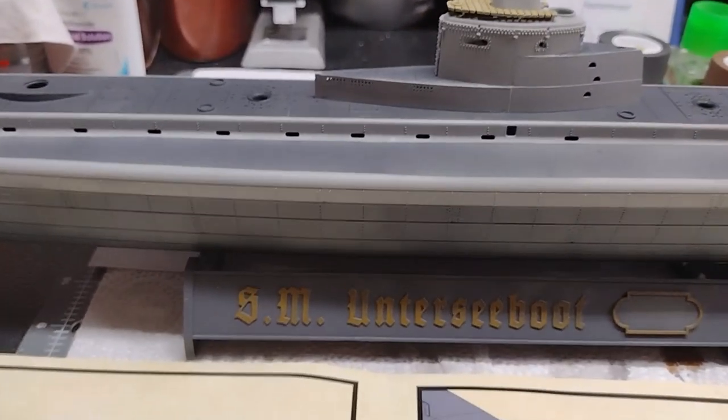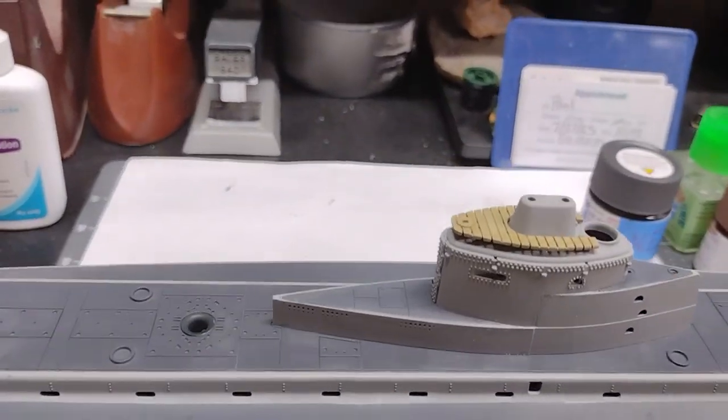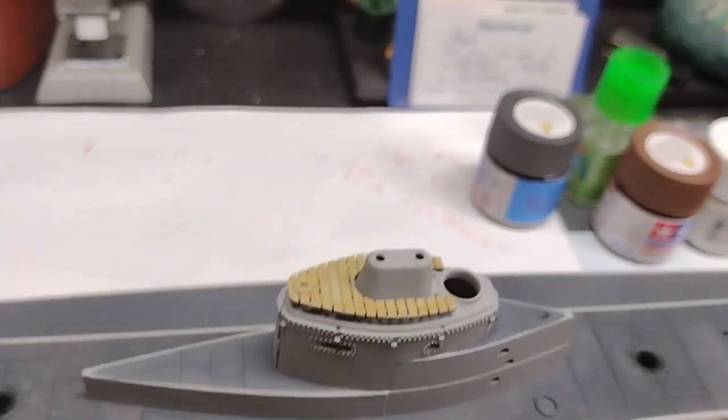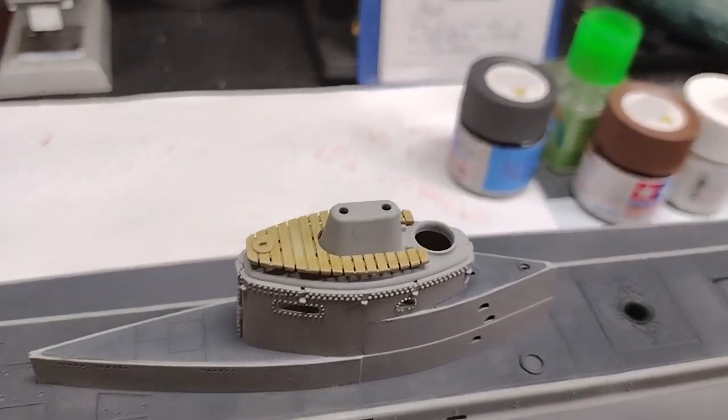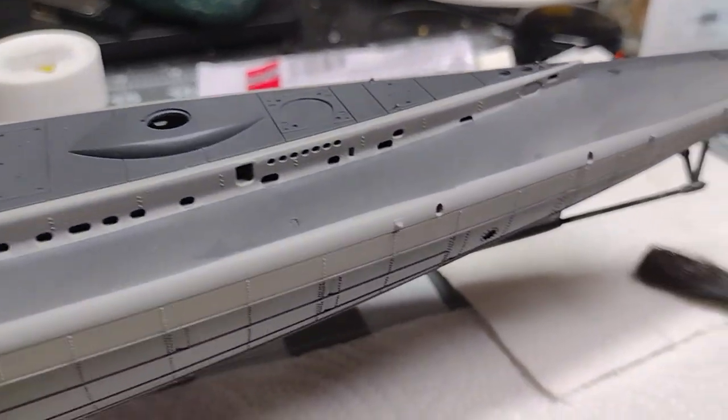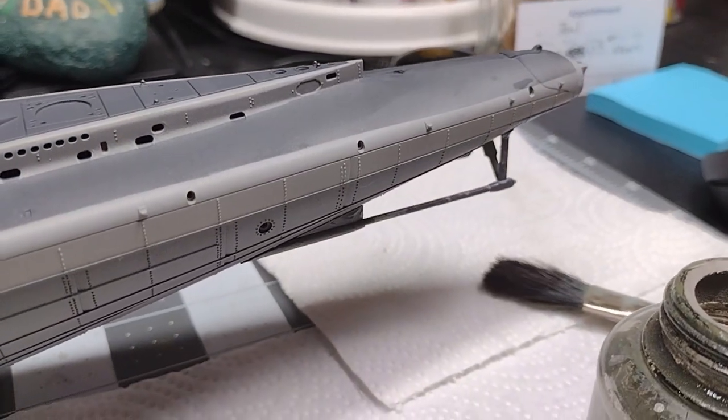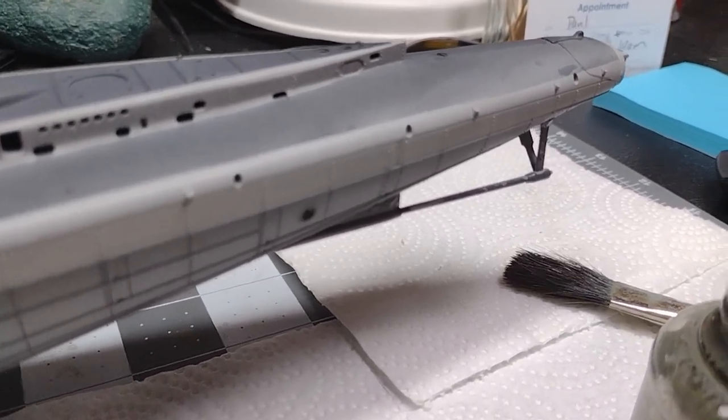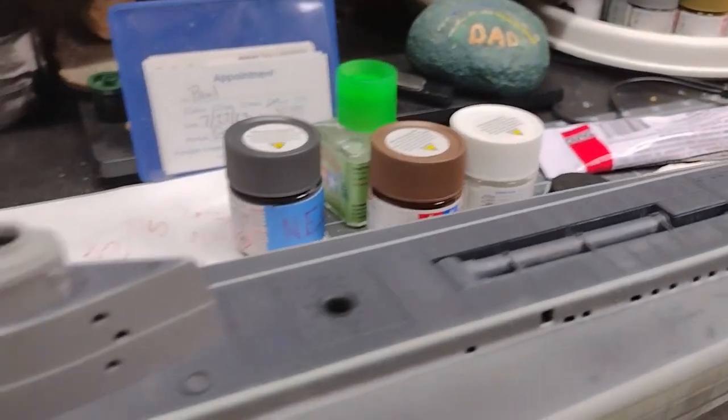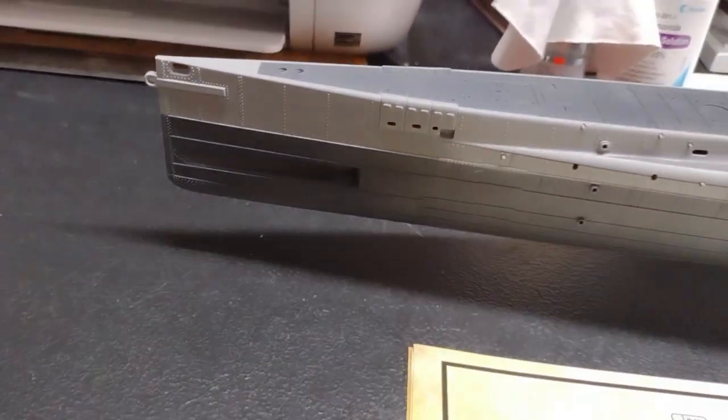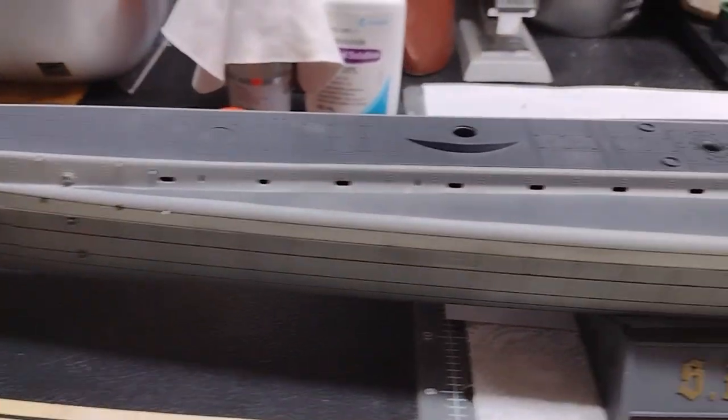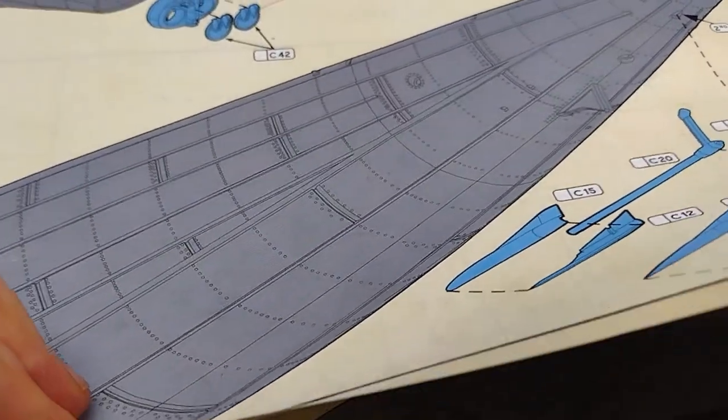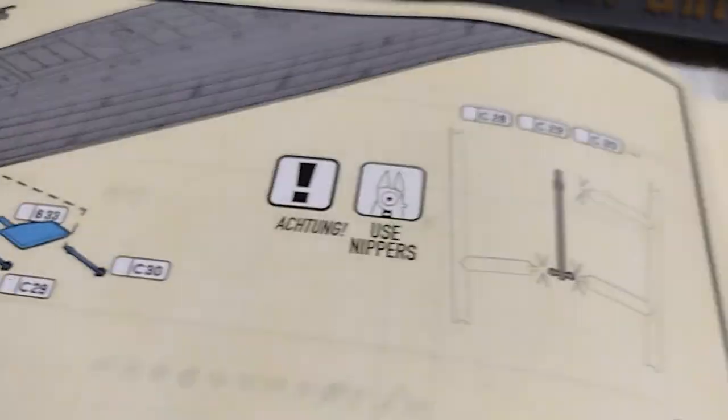Alright, we are at the point now where the conning tower is installed with the conning tower deck on top of it. The railing is going to go up there eventually. I have the propeller shafts put on. So next, in the book, let's see what's next. The next step shows...